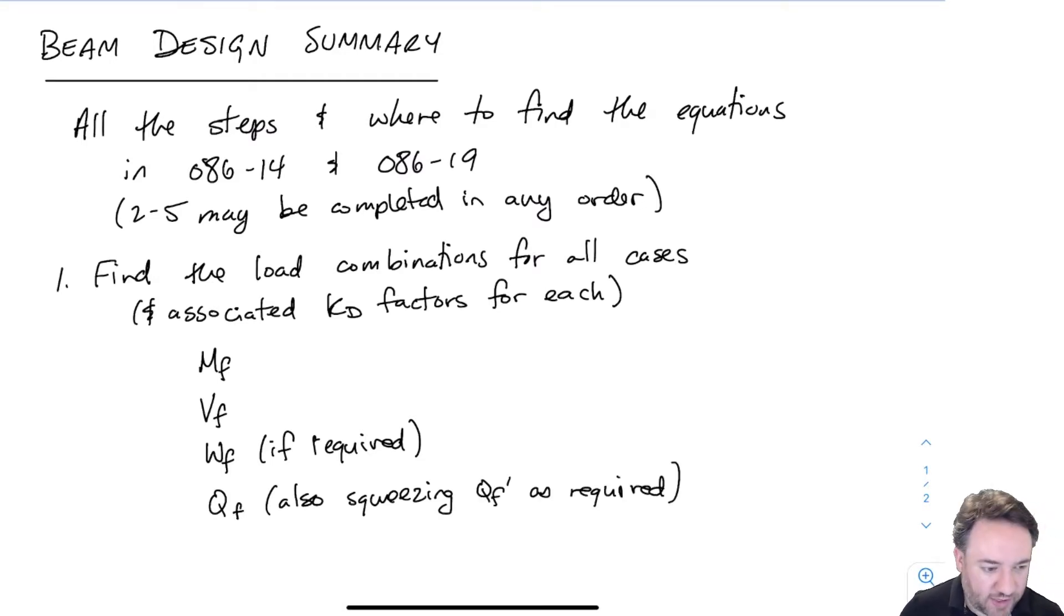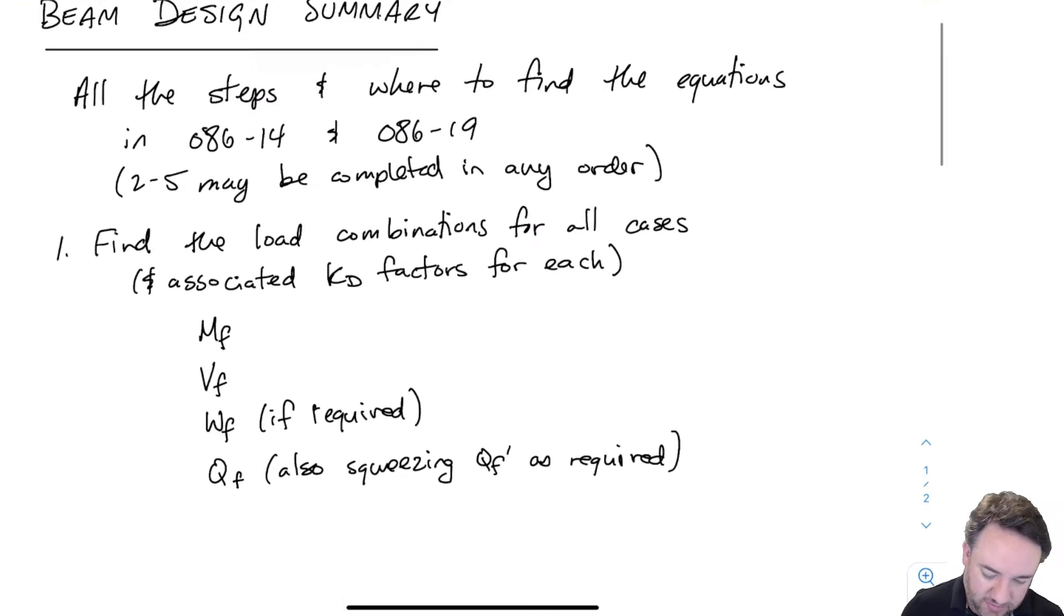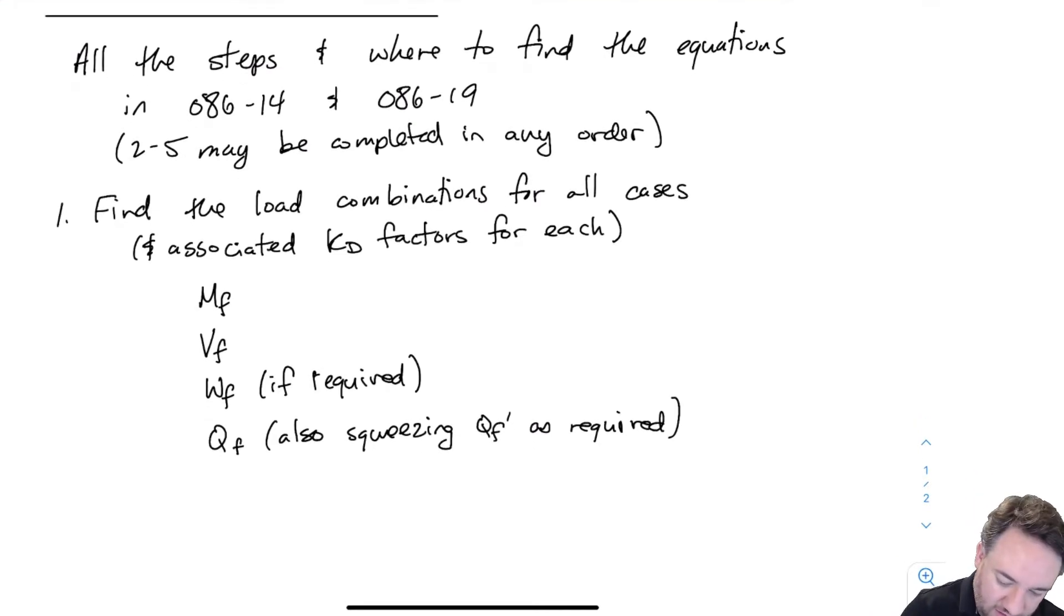And we require that for bearing we have two different potential loads that we need to compare against. One is the total load at the bearing surface and the other is what I have been calling the squeezing load, the load that goes directly from the top of the beam to the bottom of the beam. And for each of these I need to find one value for each kd that I have in my problem.